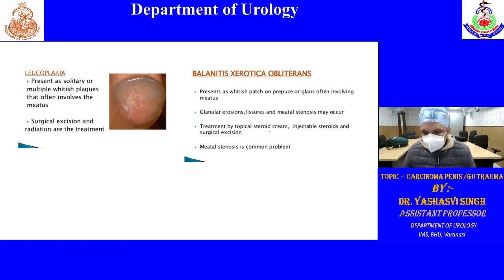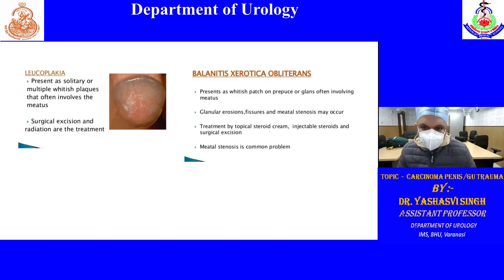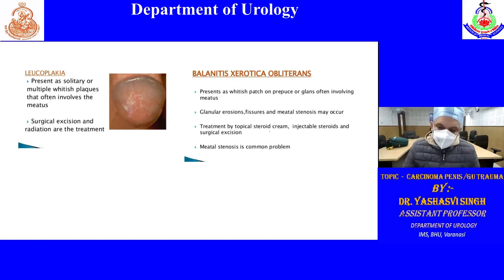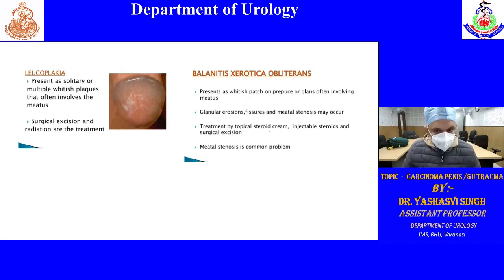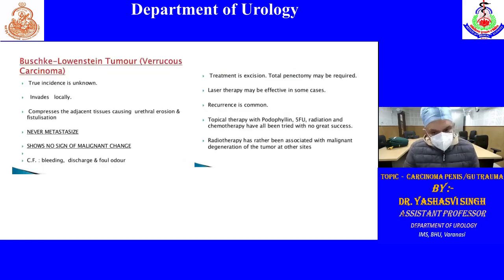BXO presents as a whitish patch on the prepuce or glans, often involving the meatus. To differentiate vitiligo from BXO: vitiligo will not involve the urinary meatus, but BXO looks exactly like vitiligo but will involve the urinary meatus. This distinction is asked in viva and NEET exams.